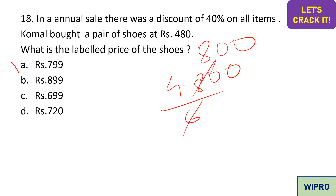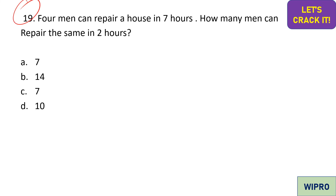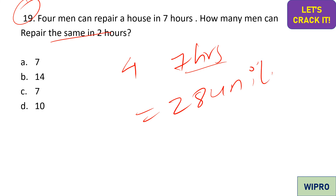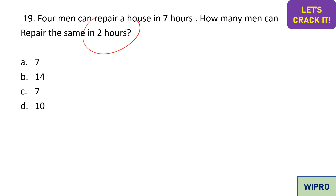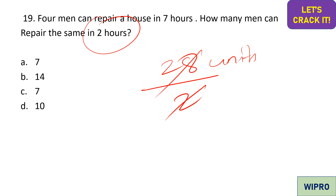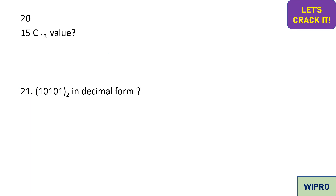A work and time question: four men can repair a house in seven hours. How many men are needed to repair the same house in two hours? Total work = 4 × 7 = 28 units. To complete 28 units in 2 hours, we need 28 / 2 = 14 men. Option B is the correct answer.